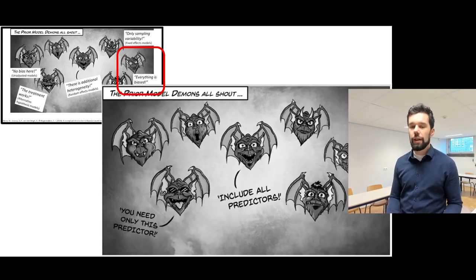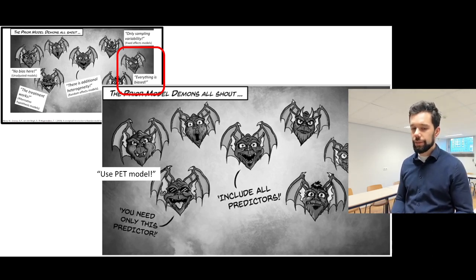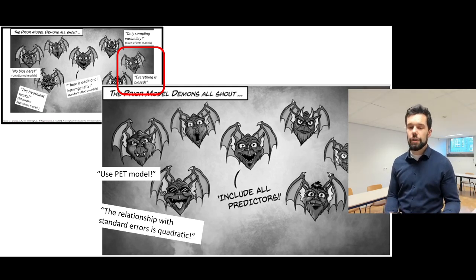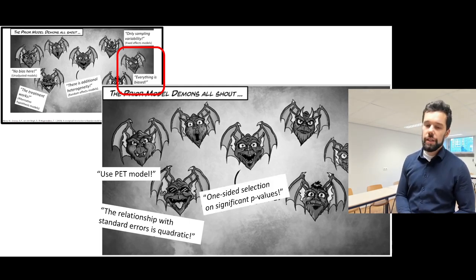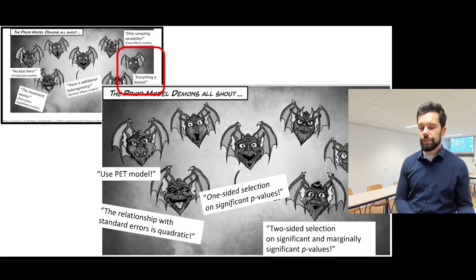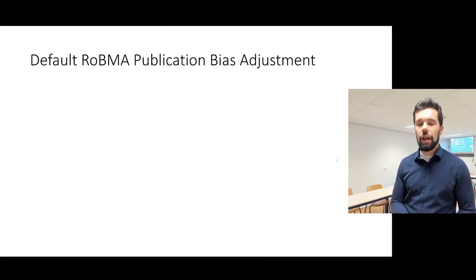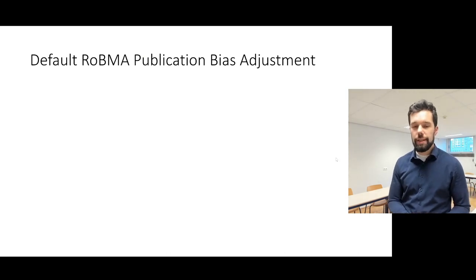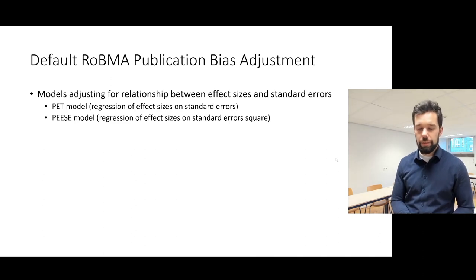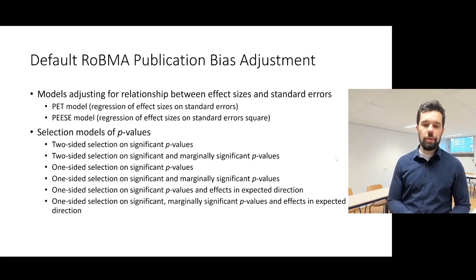We can split that publication bias component into different models assuming different publication bias processes. For example, we can specify the PET model, assuming a relationship between effect size and standard errors; or the PEESE model, assuming a relationship between standard errors squared and effect sizes; or different selection models, such as one-sided selection on significant p-values, or two-sided selection on significant and marginally significant p-values. In the default ROBMA ensemble, we use eight different model types — PET and PEESE for bias adjustment, plus six additional weight functions combining different p-value thresholds and directionality of selection.